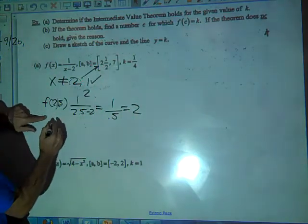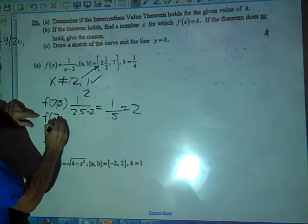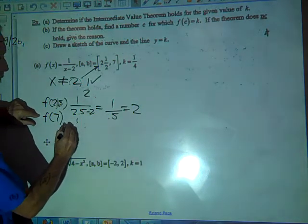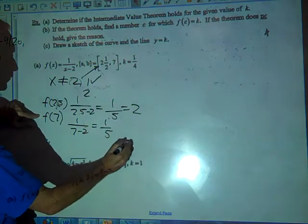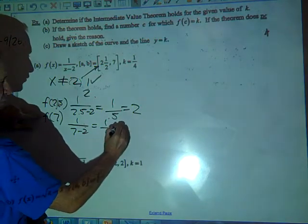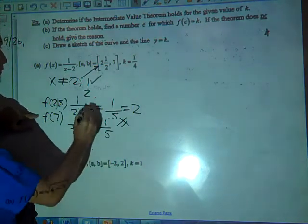So that's okay and we have to make sure it doesn't equal, so we'll try f of 7. That's going to be 1 fifth, 7 minus 2 equals 1 fifth. So these two are not equal so it meets condition 2.